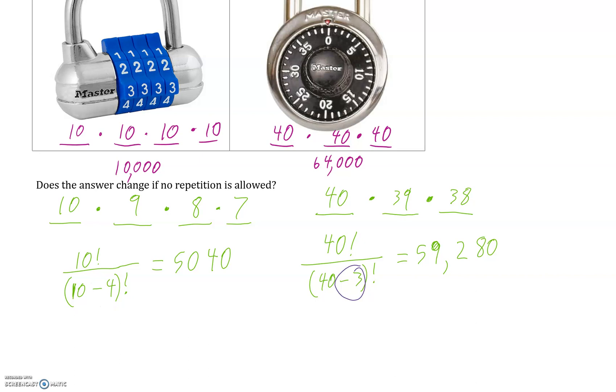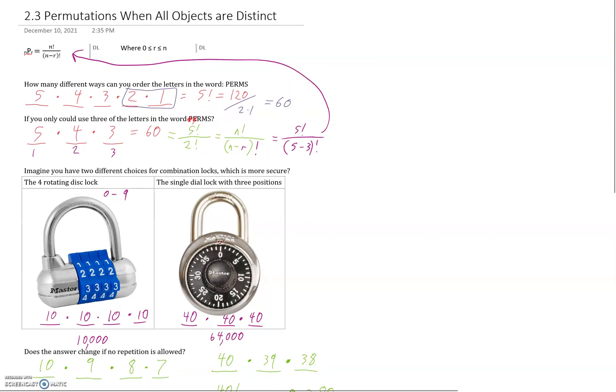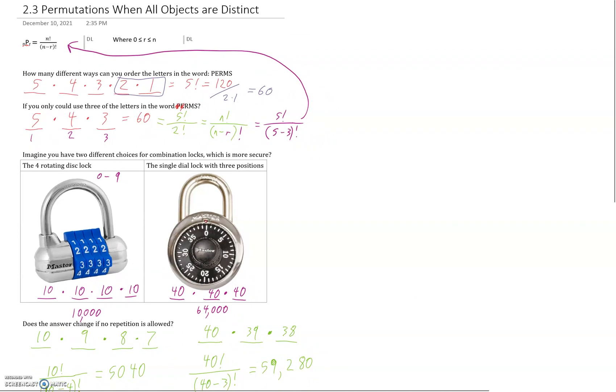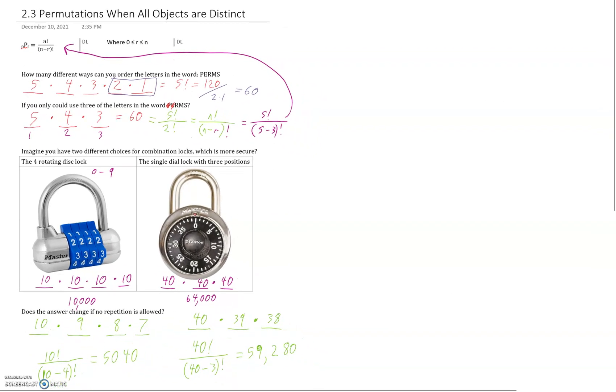So I hope this video helps you understand how to do permutations when all objects are distinct, and especially using that formula for permutations when it kind of changes, when there's no repetition allowed. So that's when the objects are distinct. So how to use that formula. Hope this video helps, and good luck.